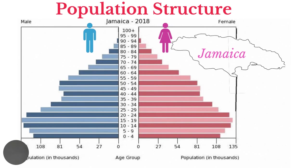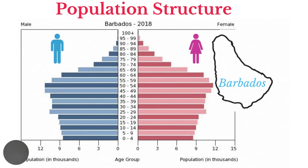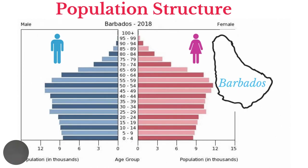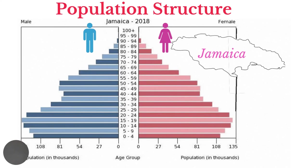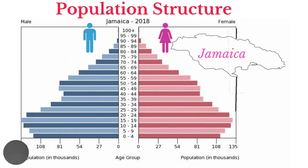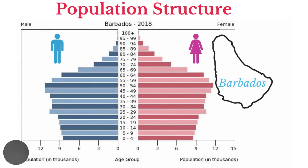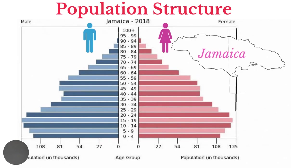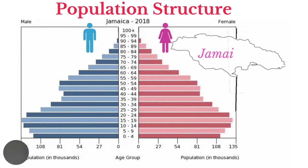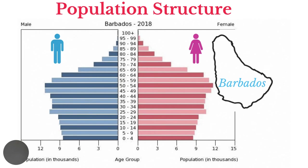While the fertility rate of Barbados is 1.6 births per woman, that of Jamaica is 1.9 births per woman. Also, the net migration for Jamaica is negative 3.824 per thousand population, while that of Barbados is negative 0.276 per 1,000 persons. This means that there are more persons migrating from Jamaica. The main reason people migrate is to seek employment, which reduces the population of the adult age group.